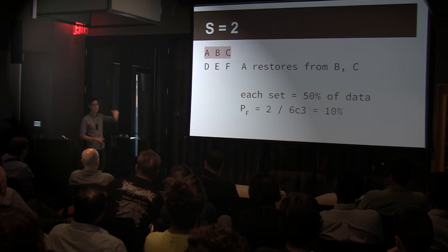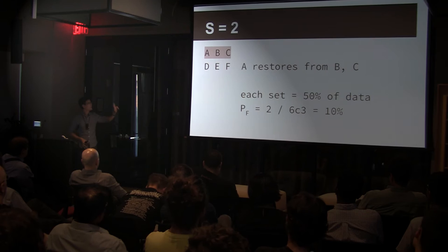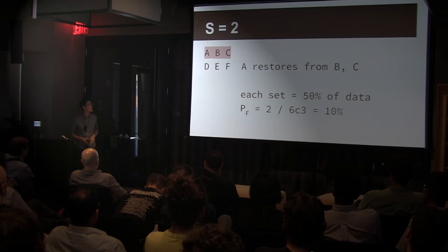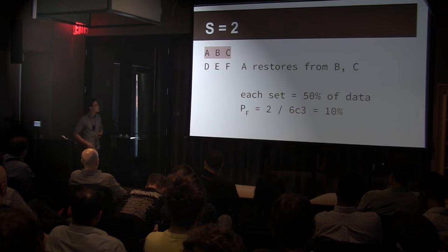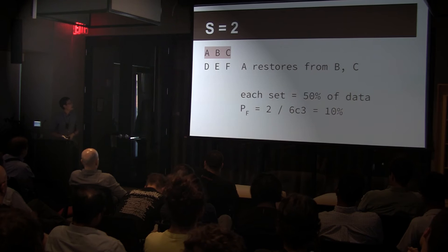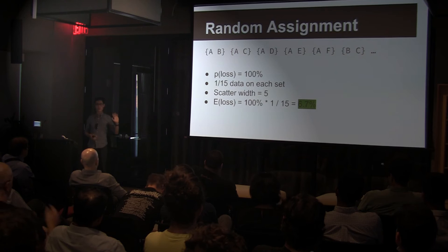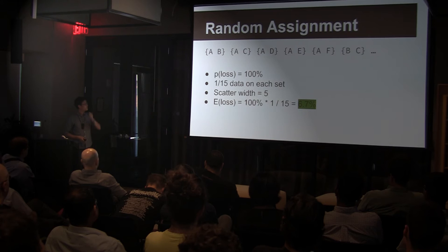Scatter width of two is more straightforward — this looks more like Mongo. You've got two sets: half your data maps to ABC, and the other half to DEF. If A goes down and you bring it back up, it can get half its data from B and half from C, so that's a scatter width of two. With random assignment there are 15 sets, and A basically participates in a set with every other node, so your scatter width is five, or N minus one.